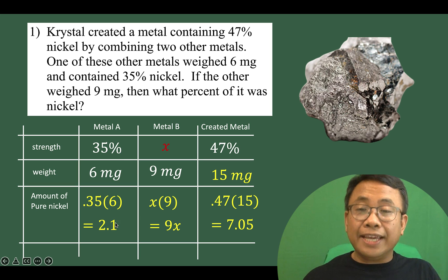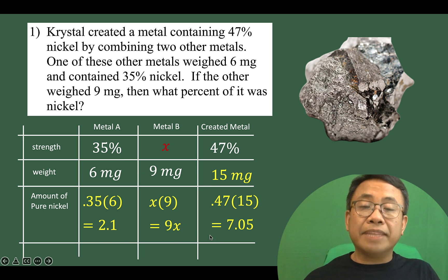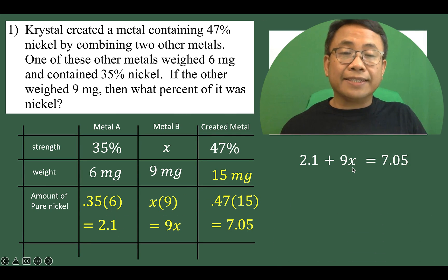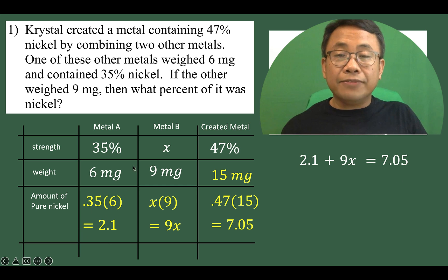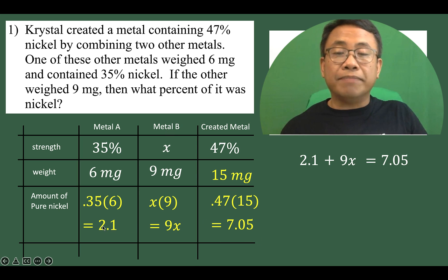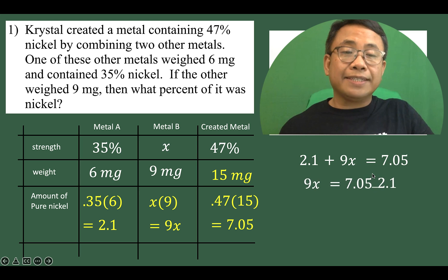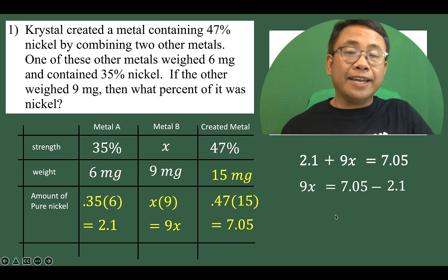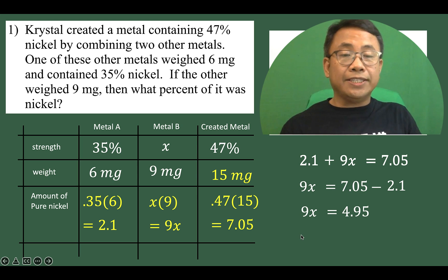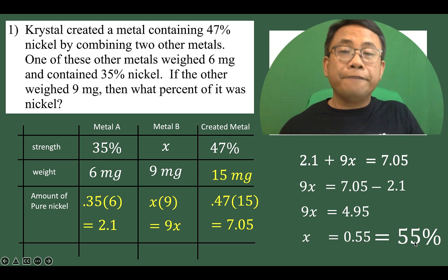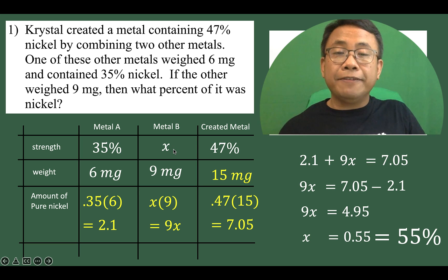From this table, the amount of pure nickel in metal A plus the amount of pure nickel in metal B equals the combined pure nickel for the created metal. Solving this equation: subtract 2.1 from both sides to get 9x equals 4.95, then divide both sides by 9 to get x equals 0.55. Converting to percent, x equals 55%. So the strength of metal B is 55%.